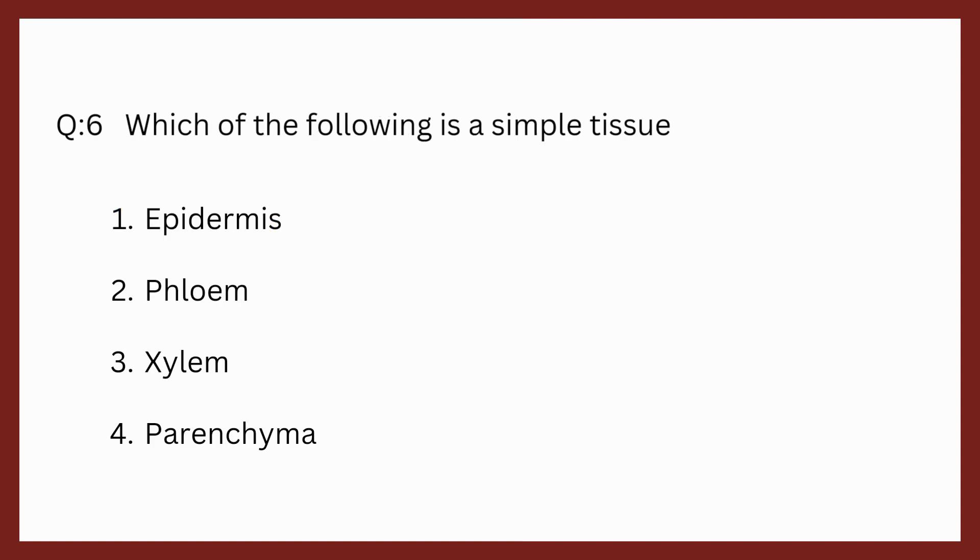Question 6. Which of the following is a simple tissue? Options are epidermis, phloem, xylem, parenchyma. The correct answer is parenchyma. It is a simple tissue and we have studied that simple tissues are of three types: parenchyma, collenchyma, and sclerenchyma.